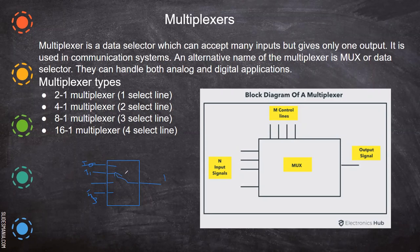How does the multiplexer know which input to select? There come the selection lines — s0 and s1. Since four inputs are there, we have two control lines. As we have the combinations: if it is 0,0 then i0 is selected; if it is 0,1 then i1 is selected; if it is 1,0 then i2 is selected; and 1,1 means i3 is selected.